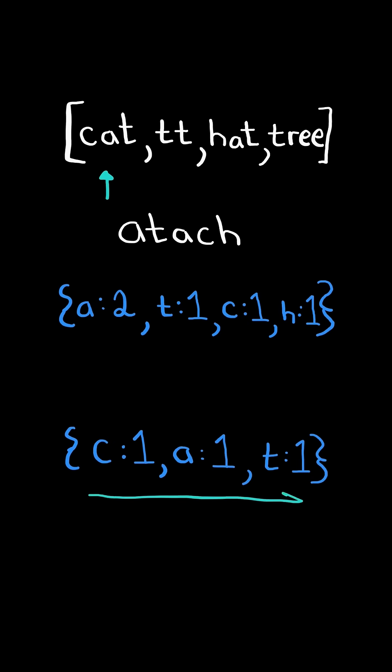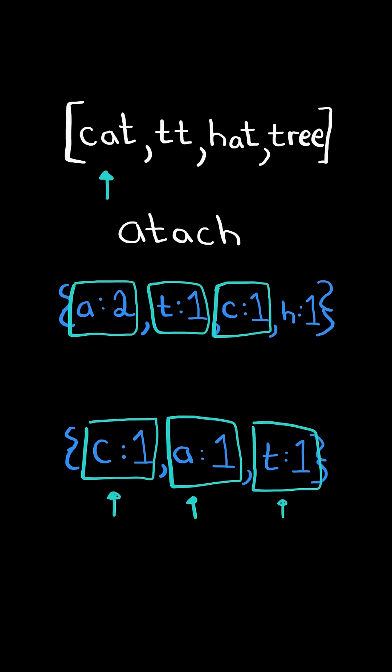We then iterate through the map and check if the frequency is less than or equal to the frequency in the string map. If all the frequencies are less than or equal, then we can form the word and add its length to total.